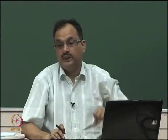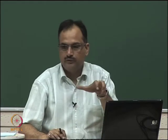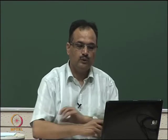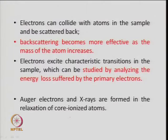From the diffraction at crystal edges, you can determine the surface structure — how the surface is created and the energy of that surface. An electron can also collide with atoms in the sample and be back-scattered; back-scattering is more effective for high-mass atoms like platinum or rhodium. Electrons also excite characteristic transitions in the sample, which can be studied by analyzing the energy loss suffered by the primary electron. Auger electrons and X-rays are also formed — the same principle as before.